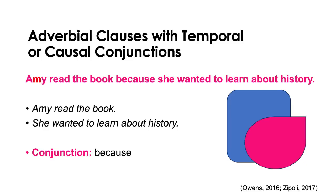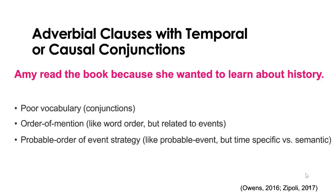When thinking about difficulty levels with syntax, coordinating conjunctions that just join clauses together tend to be easier than subordinate conjunctions that communicate temporal or causal information. What typically happens when someone is struggling with adverbial clauses is that it comes down to vocabulary issues — not knowing conjunctions and not knowing how to use them. They also use 'order of mention' strategy, similar to word order strategy, just thinking about the order events were mentioned rather than paying attention to temporal vocabulary.